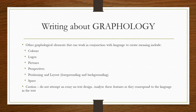How do we write about graphology? Well, there are other graphological elements beyond typography and orthography that can work in conjunction with language to create meaning. These include things like colour, logos, pictures, perspectives, positioning, layout and space. You may notice that I changed the slide design here and I did that because I wanted to try and illustrate the point about graphology being a visual register.